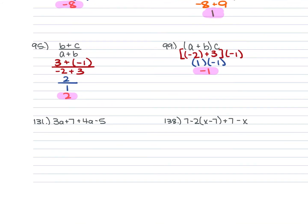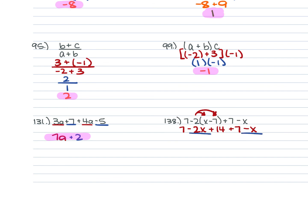The remaining questions involve simplifying. For 131, we have 3A + 7 + 4A − 5. Combining like terms: 3A + 4A = 7A, and 7 − 5 = 2, giving 7A + 2. For 138, we have 7 − 2(X − 7) + 7 − X. Distribute the −2: 7 − 2X + 14 + 7 − X. Combine the X terms: −2X − X = −3X. Combine constants: 7 + 14 + 7 = 28. Answer: −3X + 28.